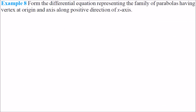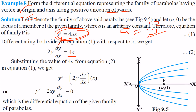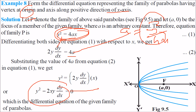Form the differential equation representing the family of parabolas having vertex at origin and axis along the positive direction of the x-axis. The equation of such a parabola is y square equal to 4ax. Differentiate both sides: 2y dy by dx equal to 4a. From the original equation, a equals y square by 4x. Substitute a back in and rearrange. This is the required differential equation — your concluding result.